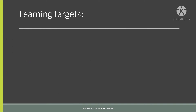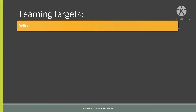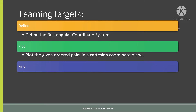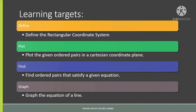Learning targets: first, define the Rectangular Coordinate System; second, plot the given ordered pairs in a Cartesian Coordinate Plane; third, find the ordered pairs that satisfy a given equation; and fourth, graph the equation of a line.